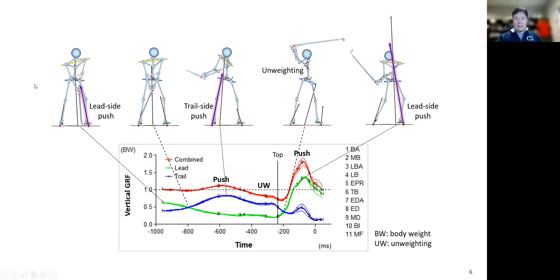At the beginning of the backswing, or even before it starts, you have a good lead side push. During the backswing, we have trail side push. During the downswing, we have the lead side push. This basically shows the stepping-like rhythm in the golf swing.